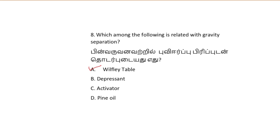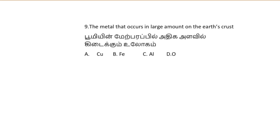The next question is: the metal that occurs in the largest amount on the earth's crust. So this is aluminum metal, which occurs in the largest amount on the earth's crust. So option C is the correct answer. Note that the question asks about a metal, not an element.